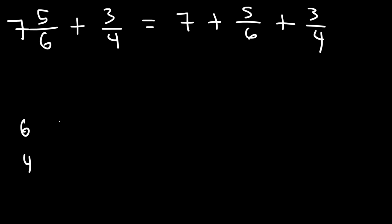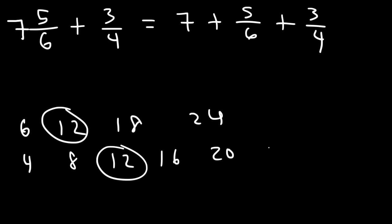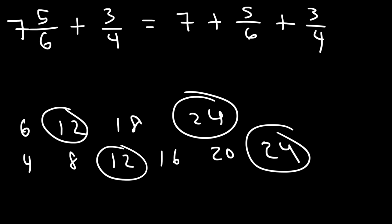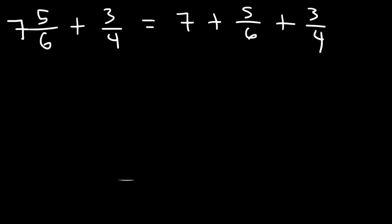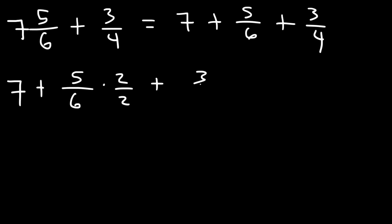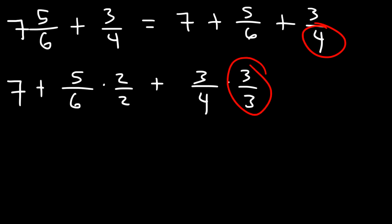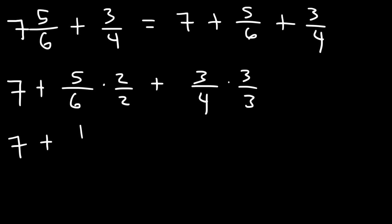The least common multiple of 6 and 4 is 12. 24 is another multiple, but it's not the lowest. You can use 24 or 12 to get the same answer, but let's use 12. I'm going to multiply 5 over 6 by 2 over 2, and the second fraction by 3 over 3. 12 divided by 6 is 2, so that's why I multiply by 2 over 2. 12 divided by 4 is 3, so I multiply the second fraction by 3 over 3. 5 times 2 is 10, 6 times 2 is 12, 3 times 3 is 9, and 4 times 3 is 12.